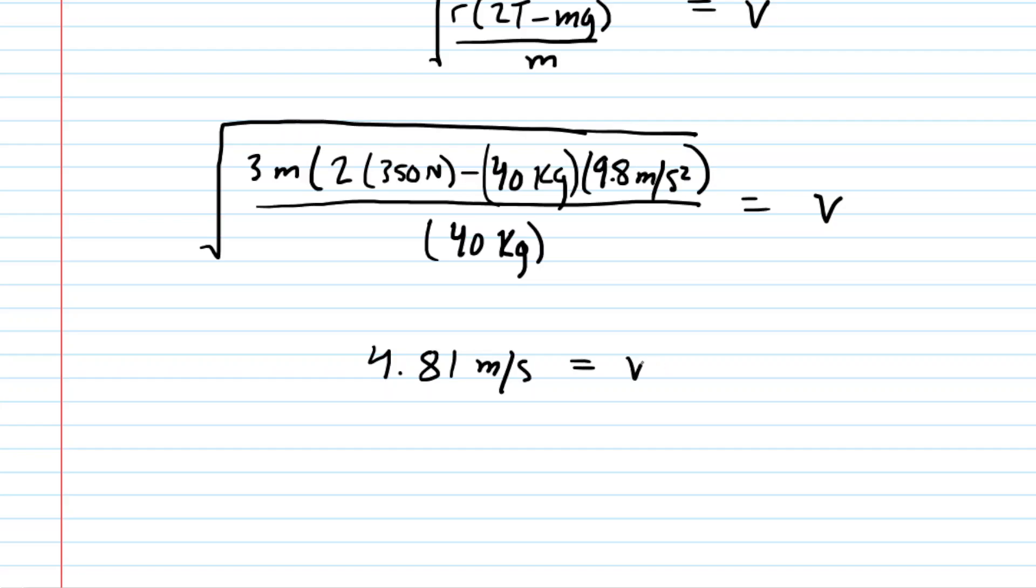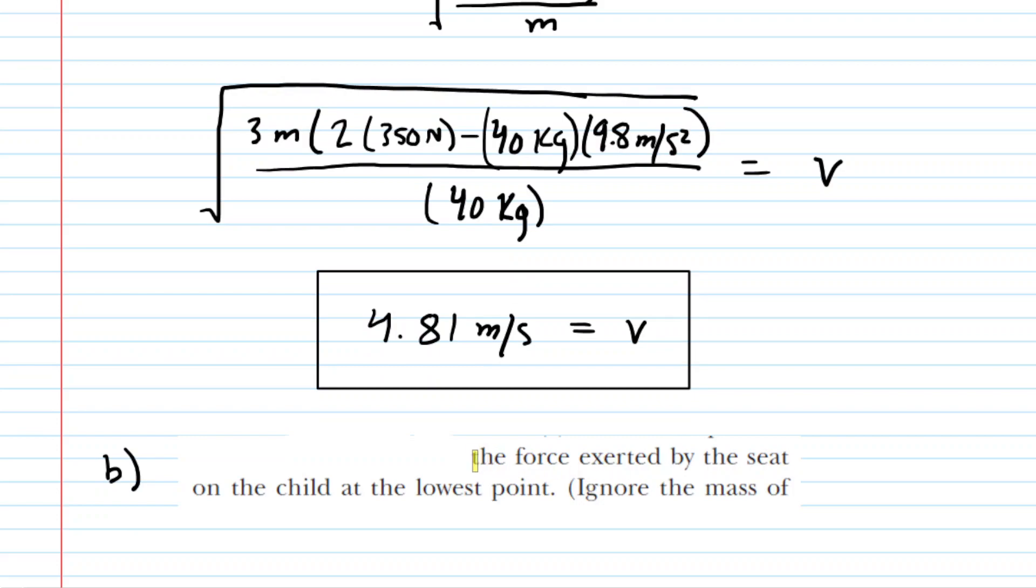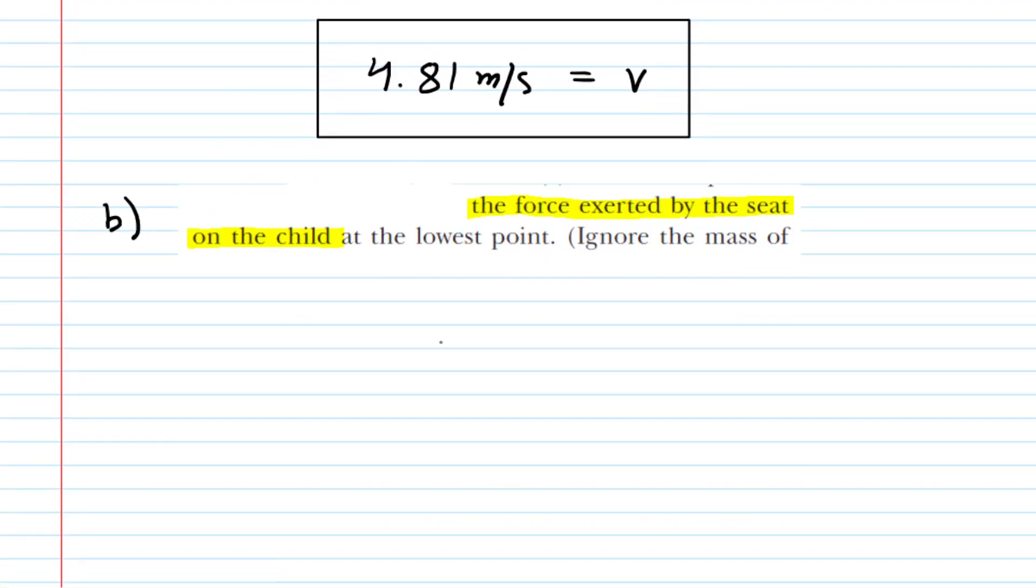So that is how fast the swing is moving at the bottom of its motion, and therefore that's how fast the child is also moving, because the child is on the swing. So we can move on to part B, which asks us to compute the force exerted by the seat on the child at this lowest point.